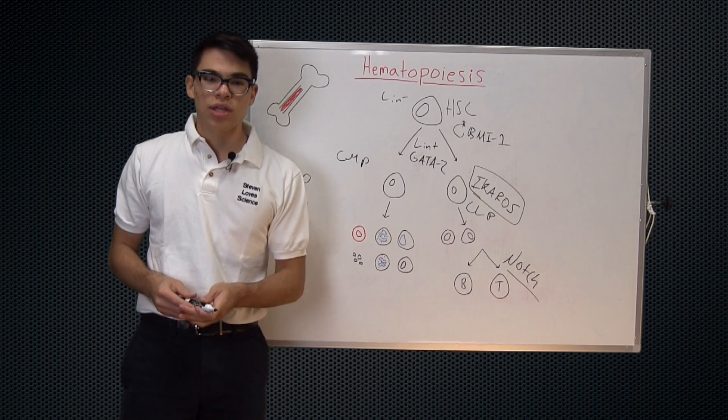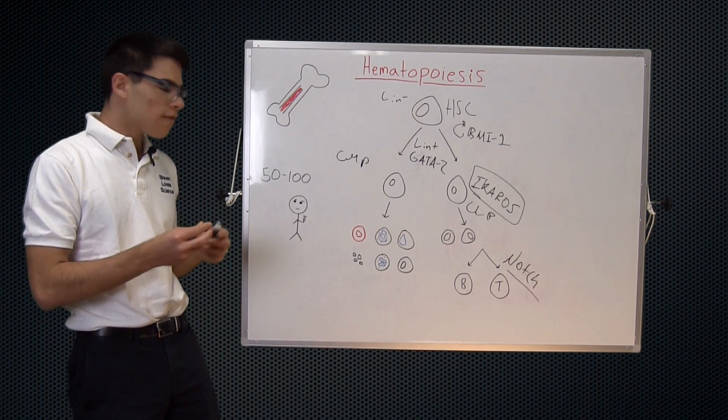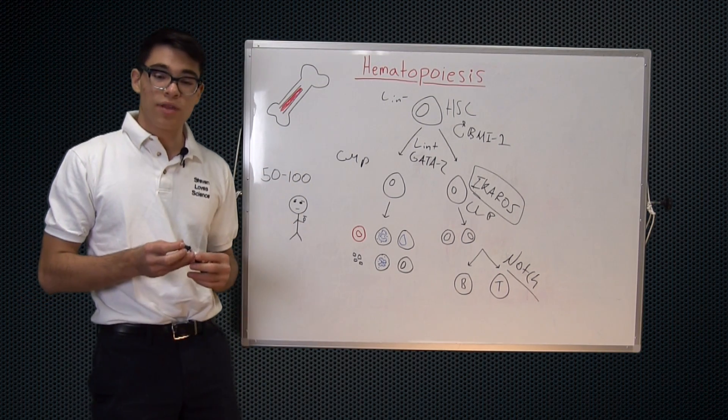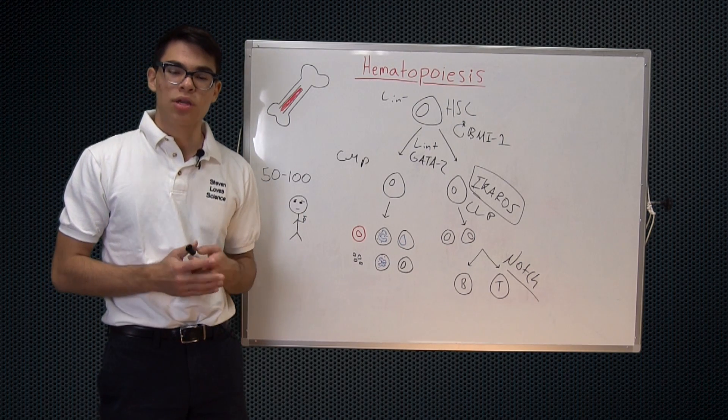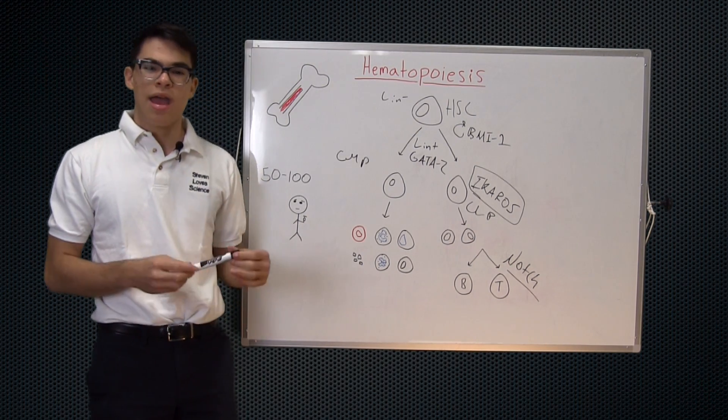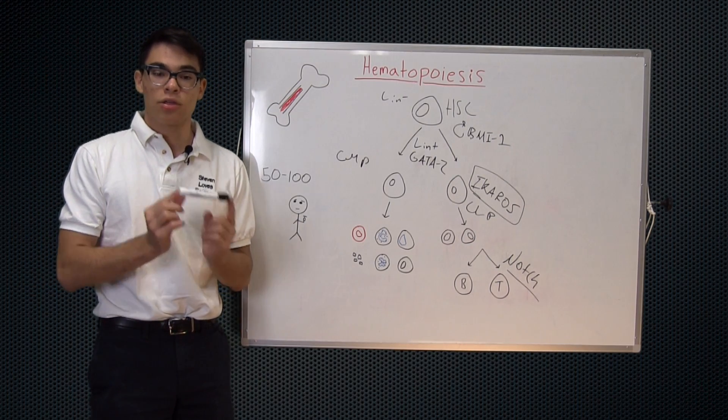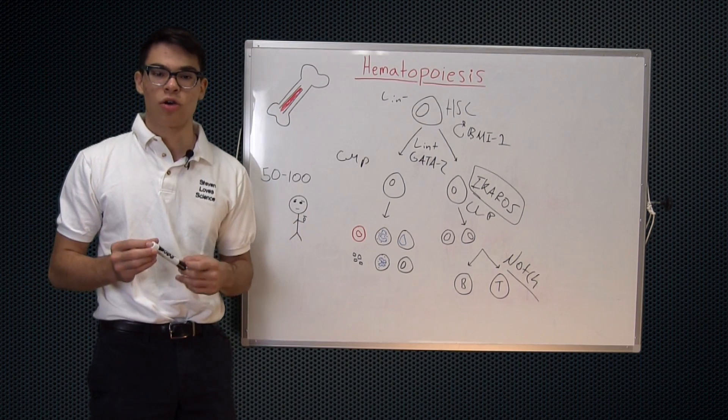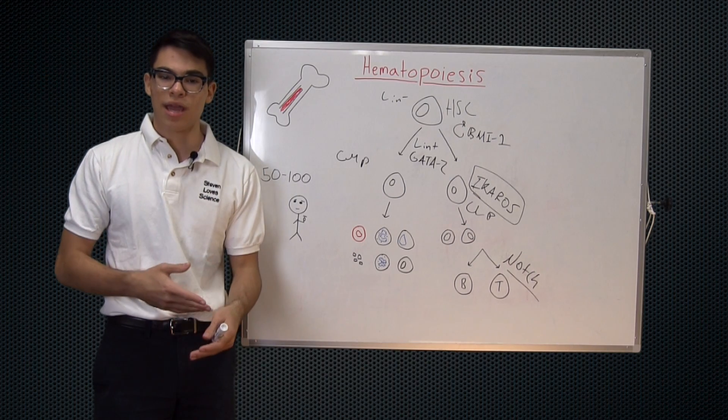So an interesting thing that I wanted to point out is that it only takes 50 to 100 of these hematopoietic stem cells to replenish the entire blood supply in the human body. And that's very important, especially for autologous transplants and whatnot.